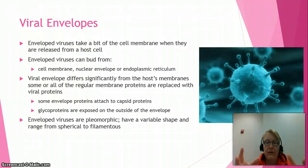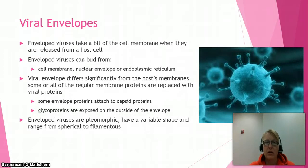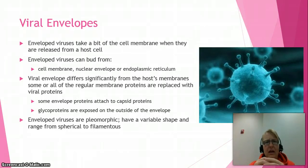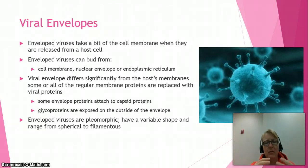Not all viruses have envelopes, but where does this envelope come from? It comes from the cell membranes of the host cell — either the nuclear membrane, the endoplasmic reticulum, or the cell membrane. You might think their membranes look a lot like ours, but that's not the case. When viruses do this, they transform these membranes to be their own, switching out proteins and changing things around so it doesn't look anything like what it used to. One important thing to remember is that these envelopes are made of phospholipids — very pliable membranes — which means the virus shape is not always the spherical shape you usually see. They can have a variety of shapes.